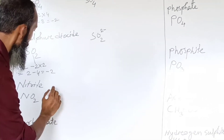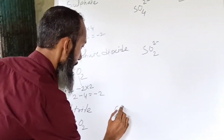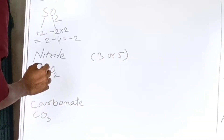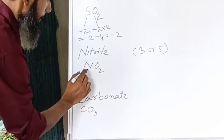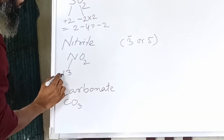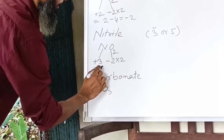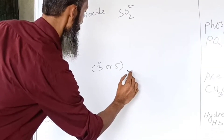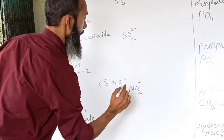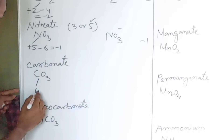For nitrite, the valency of nitrogen can be either 3 or 5. You can see in the periodic table it is in group 15, second period, atomic number 7. Here the number of oxygen taking part is less — only 2 atoms — so we will take valency as 3. Nitrogen is electropositive, oxygen has valency 2. So plus 3 minus 4 gives valency minus 1. Its symbol is NO2 1-minus.